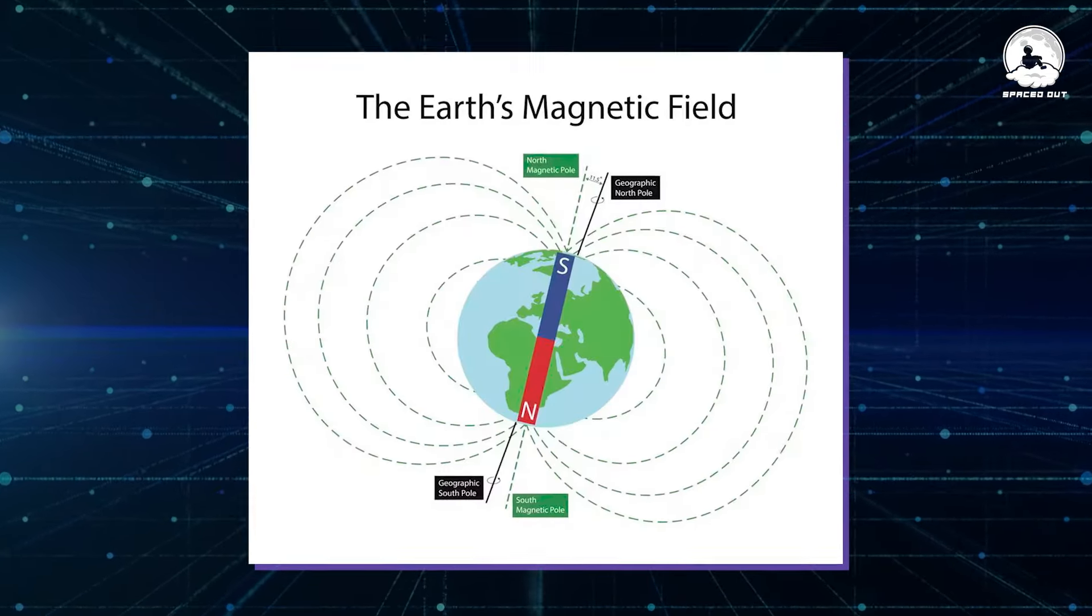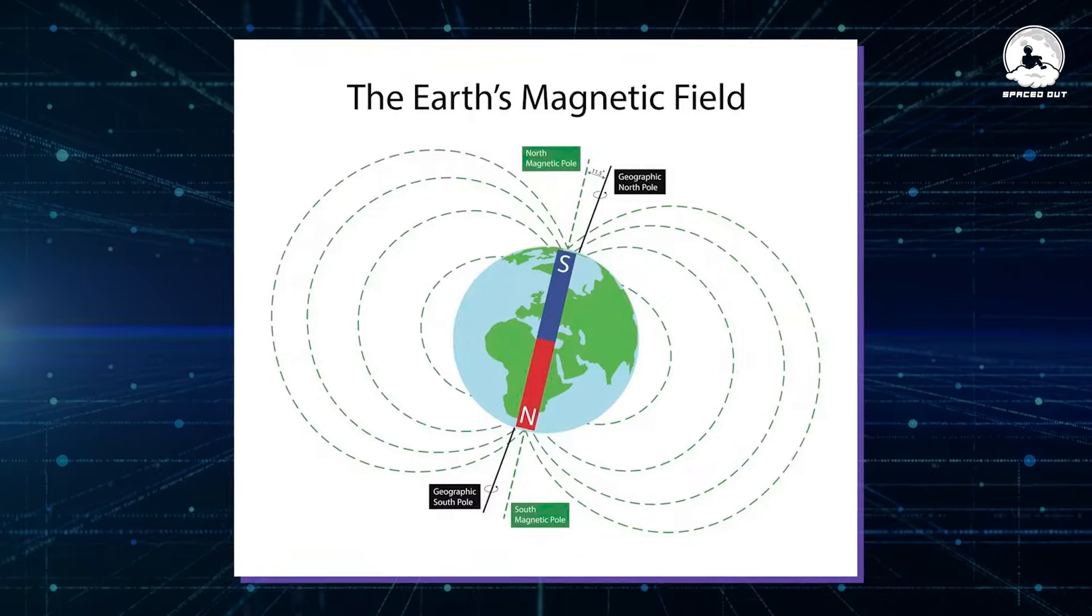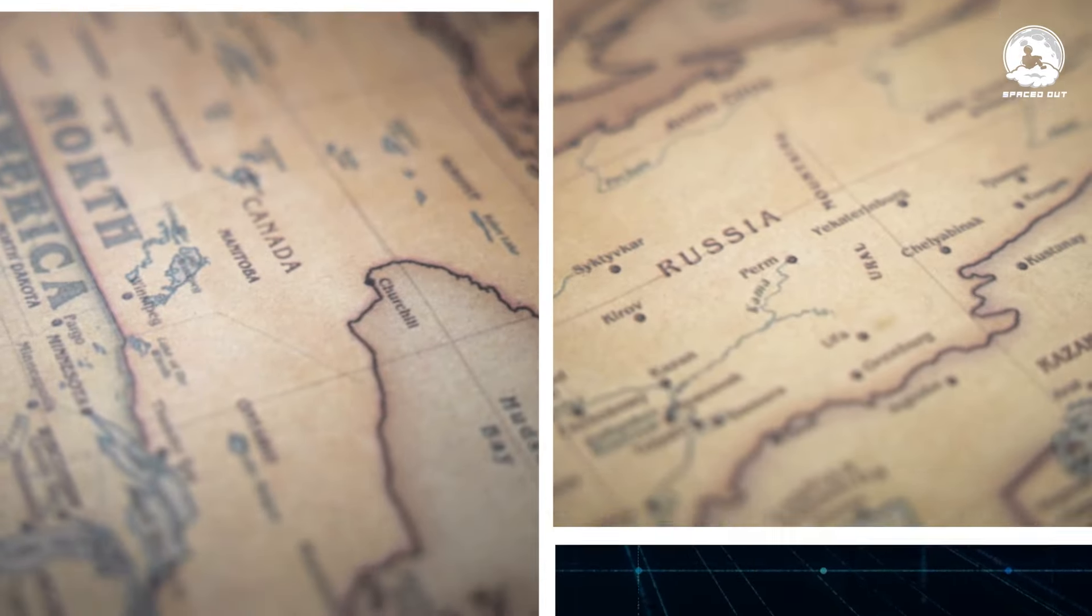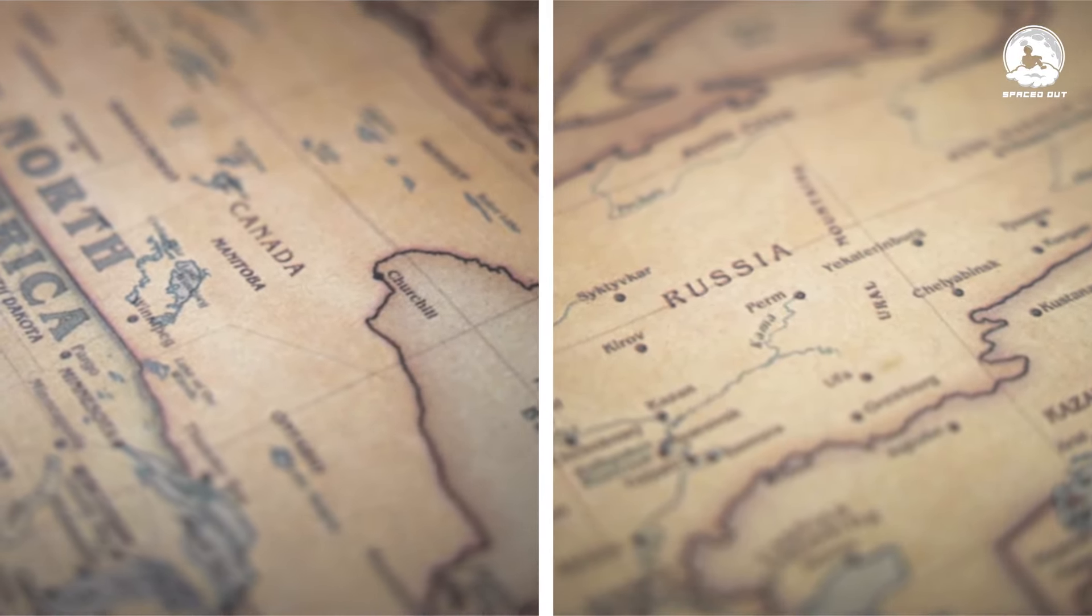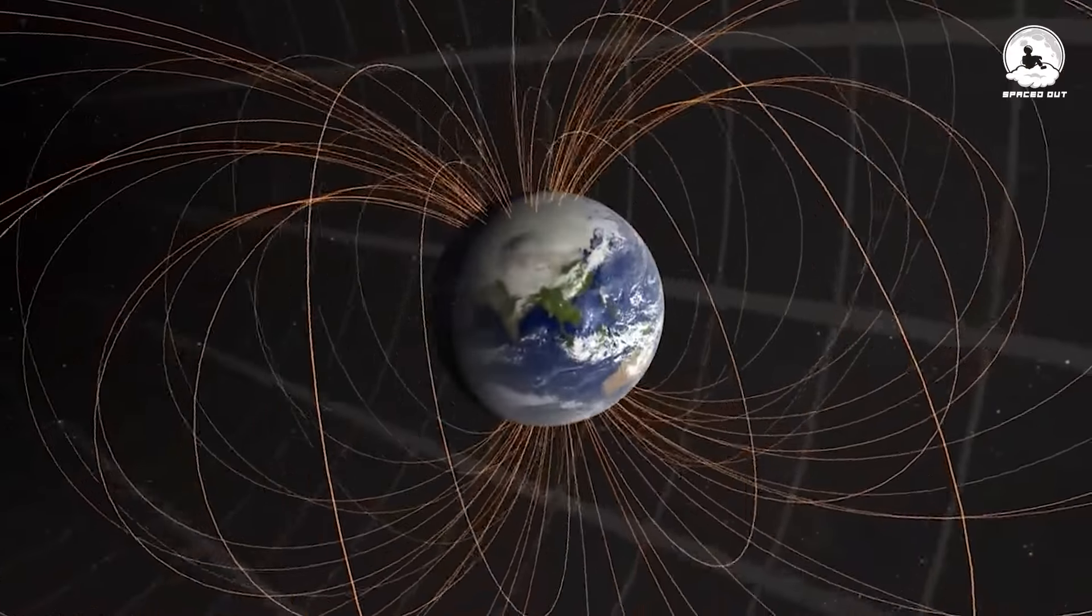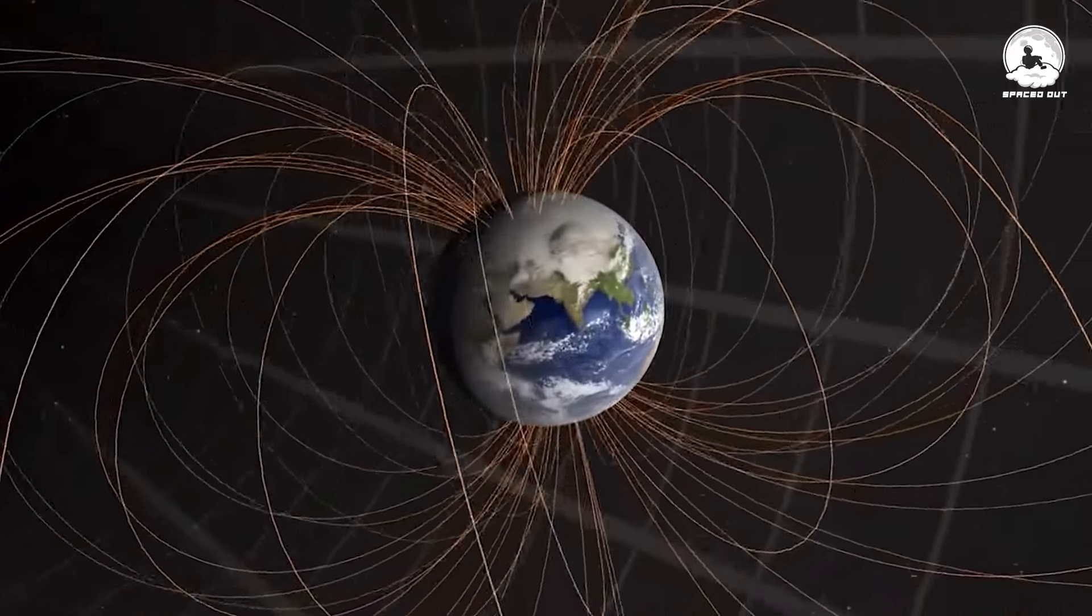Adding to the mystery, the movement of the magnetic north pole has accelerated in recent years, shifting rapidly from Canada towards Siberia. This rapid and unprecedented pole movement contradicts recorded history.